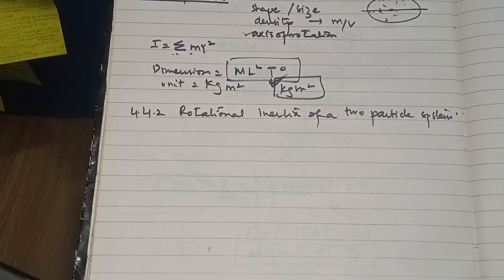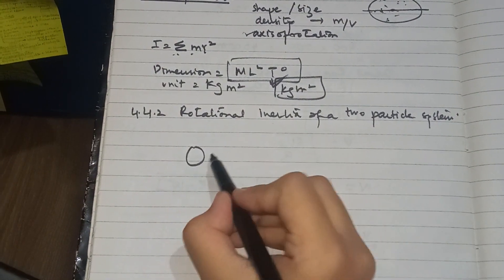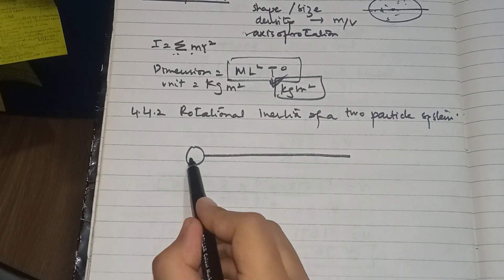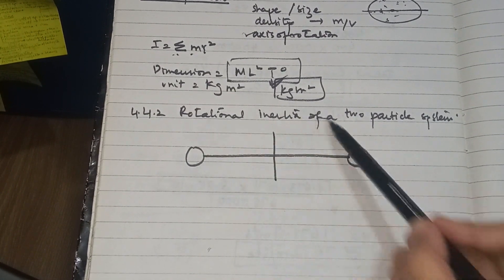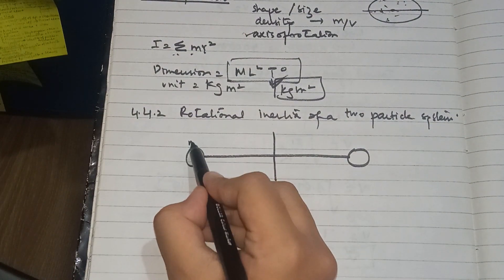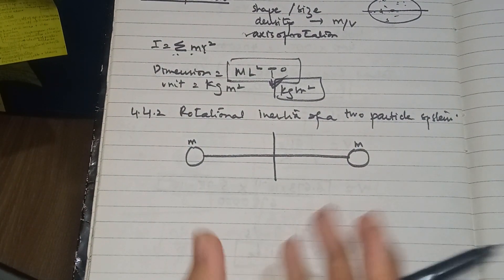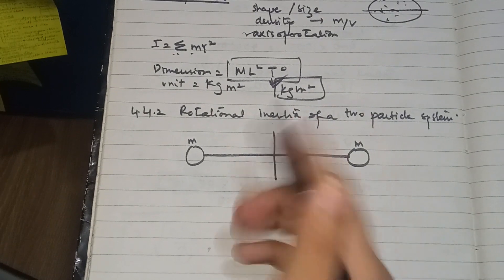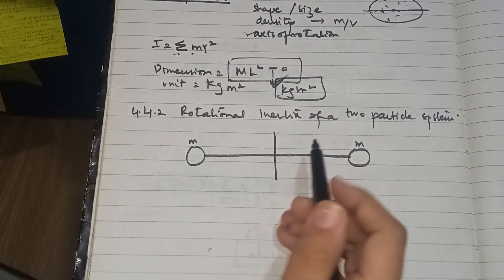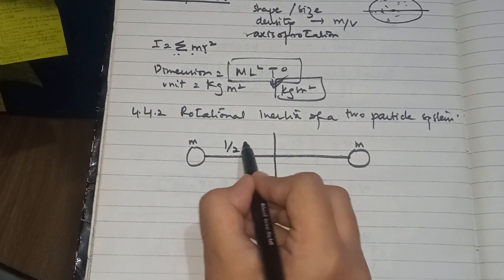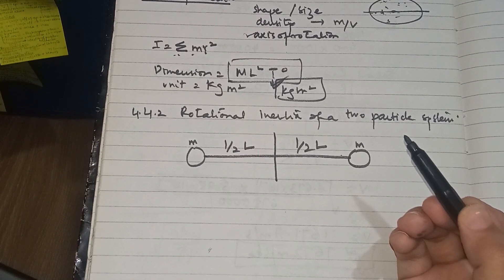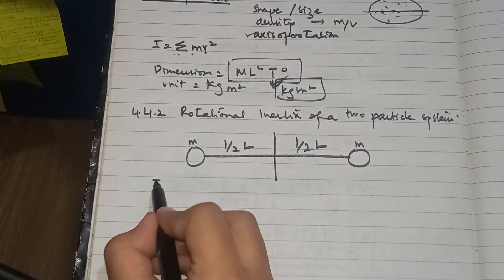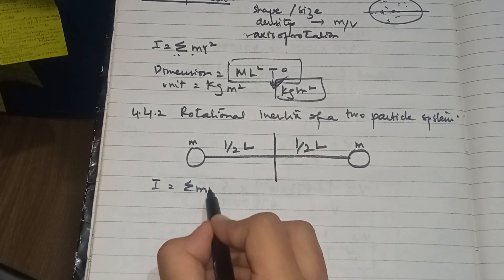Now, rotational inertia for a two-particle system. Consider a rod with two particles attached at its ends, rotating about an axis at its center. Each particle has mass m, and the total rod length is L, so each particle is at a distance of L/2 from the center. We need to find the total moment of inertia using I = Σmr².